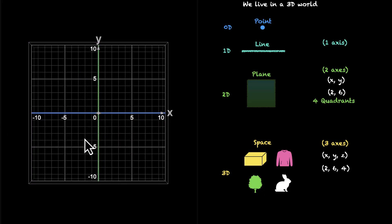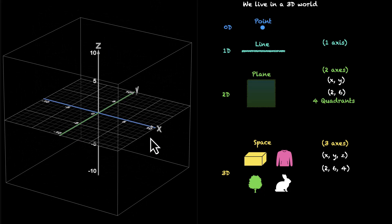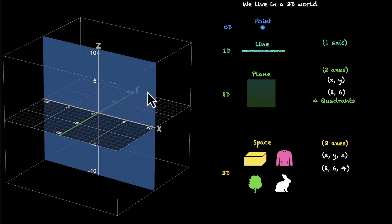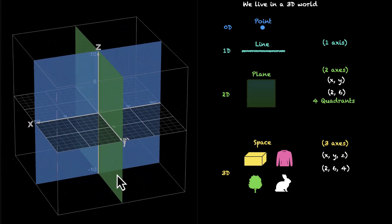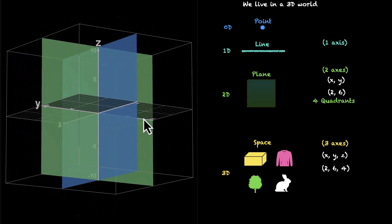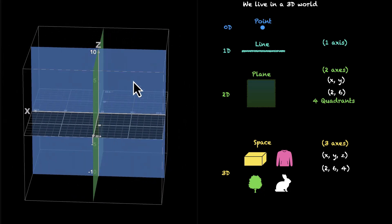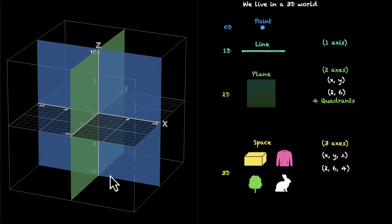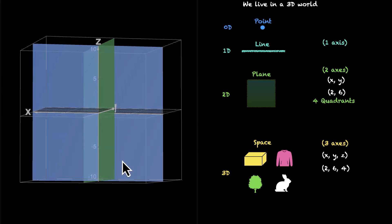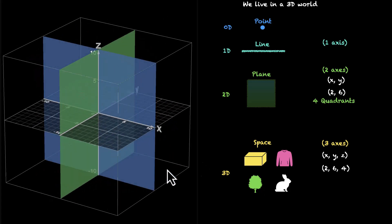Something very similar happens in the 3D world as well. Think about it — if you have one more axis, in how many parts will these three axes divide the entire space? In 2D we had quadrants. In 3D we have rooms. Think of this as your ground floor — you have four rooms on the ground floor. And then this is our basement — we have four more rooms in the basement as well. So together we have four plus four, eight rooms, and we call them octants. Quad stands for four and oct stands for eight — so four quadrants in 2D, eight octants in 3D.